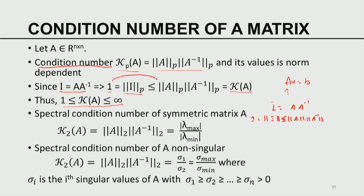When the condition number is closer to 1, we say the matrix is well-conditioned. When it is very large, it is ill-conditioned. How large is large depends on the computer's machine precision. In 32-bit arithmetic there is only the largest representable value. A matrix with condition number 10⁵⁰ is more ill-conditioned than one with 10²⁰, which is more ill-conditioned than one with 10³. This ranking of condition numbers helps quantify the degree of ill-conditioning.